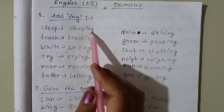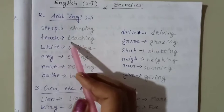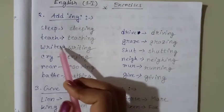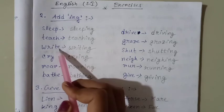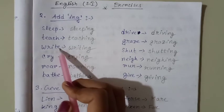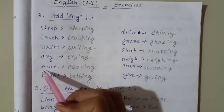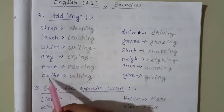I have added ing. Sleep, sleeping. Teach, teaching. Write, writing. Look, there is E at the end of this word. So we have to omit this E when we are adding ing. Cry, crying. Roar, roaring. Bath.